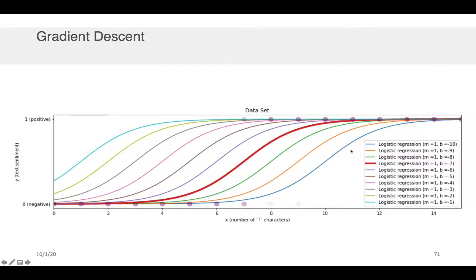Now if I just used my eyeballs, I'd probably say, b equals minus 7 looks about right. I mean, it looks like that red line, the dark one here, is probably the best fit for the model given these data points that I have here in purple.